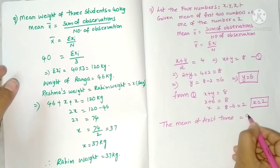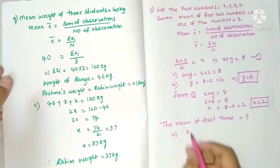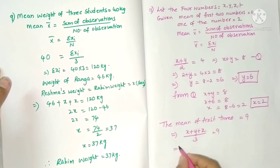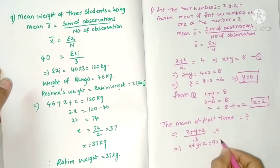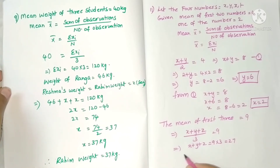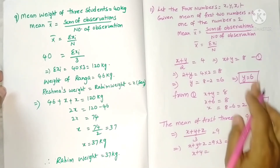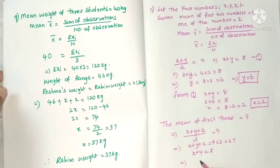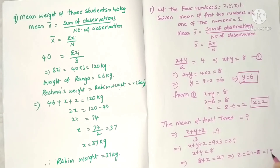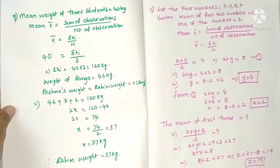The mean of the first three numbers is equal to 9. So x plus y plus z by 3 equals 9, which gives x plus y plus z equals 27. We know x plus y equals 8, so 8 plus z equals 27, therefore z equals 27 minus 8, which is 19.